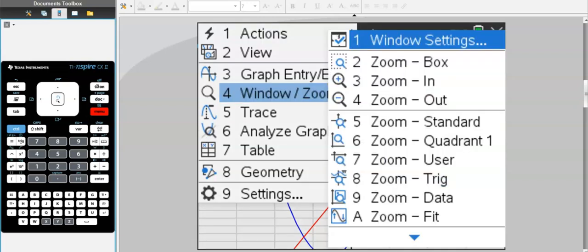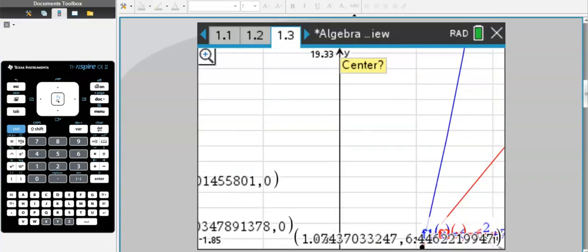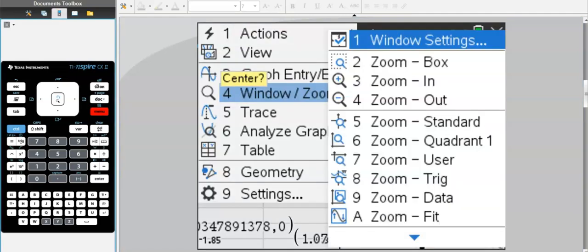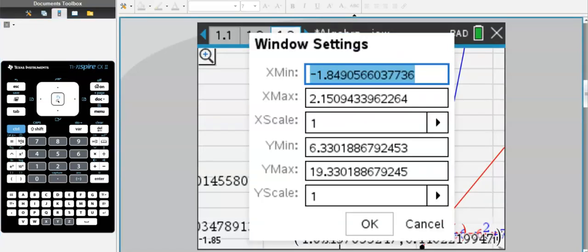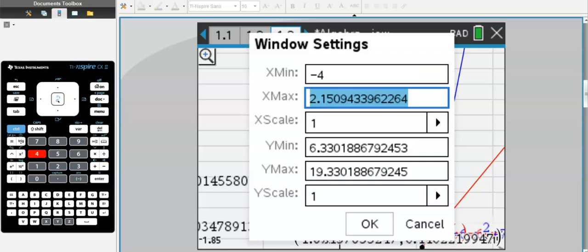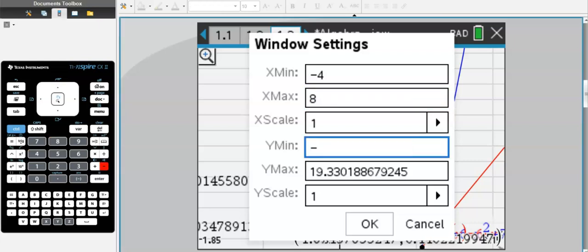I can also alter the window. If I go to window zoom, I can either zoom in, or I can zoom out using the same idea. Now we can also go to window settings and set our own thing. Notice that if we zoom in or out, it gives us these weird numbers. And let's say I just want to go from negative 4 to 8.